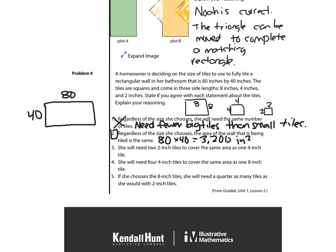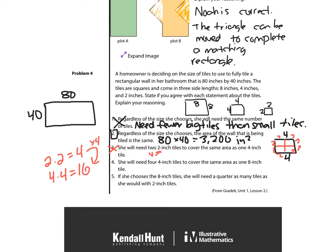Statement 3: she will need two 2-inch tiles to cover the same area as one 4-inch tile. If I break a 4-inch tile down into 2-inch tiles, you actually need 4. So I disagree. You need 4 two-inch tiles to cover the same area as one 4-inch tile. That makes sense because the area of one 2-inch tile is 2 times 2, which is 4, and the area of one 4-inch tile is 4 times 4, which is 16 — and 4 times 4 is 16.